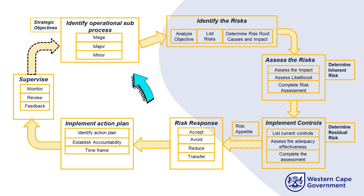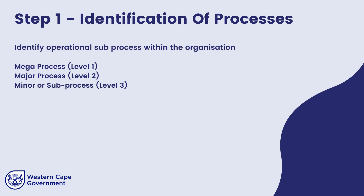It begins by identifying operational sub-processes. To achieve this, one has to analyze the strategic objectives usually found in the IDP, and then define a process for the specific objective. The best approach is to break down these processes using the three-level model — mega, major, and minor processes. While breaking down this core sub-process, you must consider: is the process appropriately defined and correctly placed within the organization? What is the process trying to achieve and how does it contribute or link to the strategic objective?